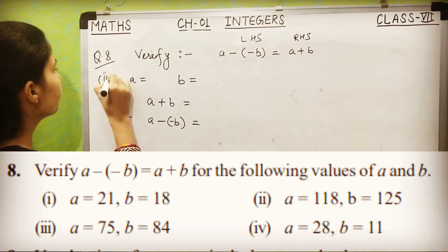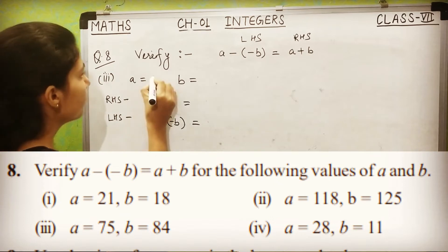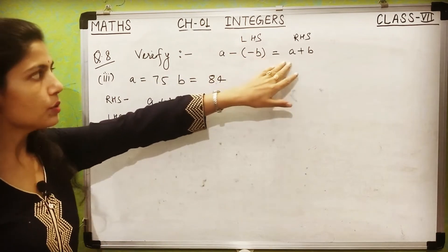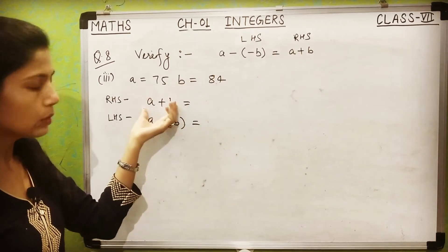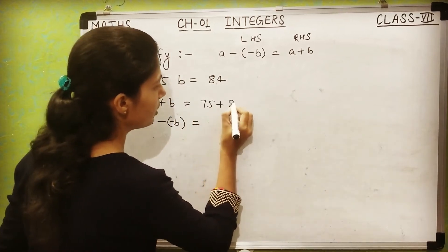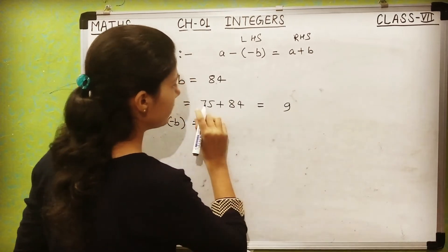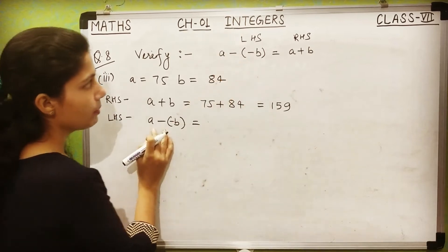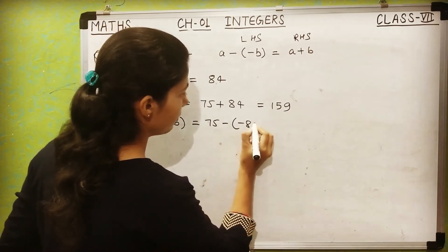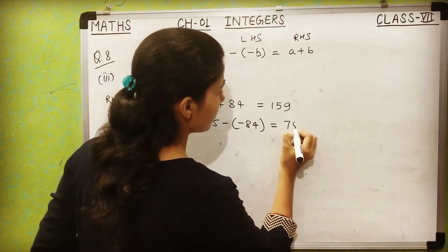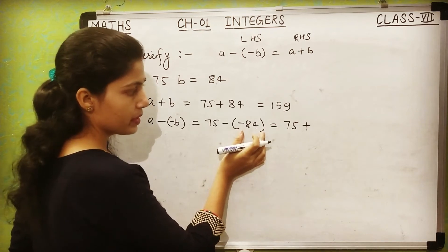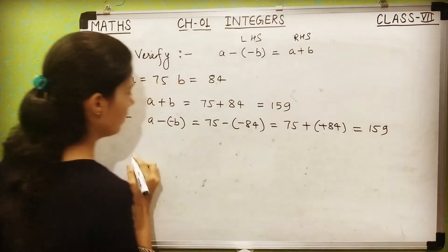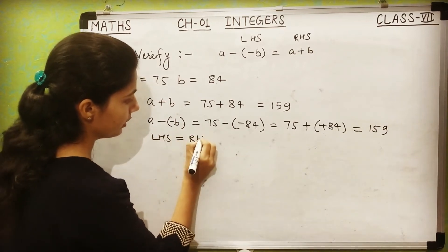Third part: A = 75, B = 84. Right hand side: 75 + 84. 5 + 4 = 9, 7 + 8 = 15, giving 159. Left hand side: 75 − (−84). Write 75 as is, put addition sign, additive inverse of minus 84 is plus 84. 75 + 84 = 159. Left hand side equals right hand side — verified.